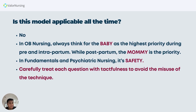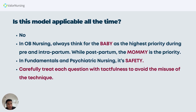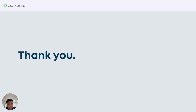Is the ABC model applicable all the time? The answer is no. In OB nursing, always think of the baby as the highest priority during pre- and intrapartum. However, postpartum, the mother is the priority — we watch for bleeding and uterine atony. Carefully treat each question with tactfulness to avoid misuse of the technique. Distinguish whether the problem is airway, breathing, or circulation to land on the most correct answer. Thank you for being with me in this session — see you in session number seven.